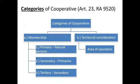Now, what are the categories of cooperative? We discussed types — categories are different. Cooperatives can be divided according to membership and territorial consideration. As to membership, a cooperative can be primary, secondary, or tertiary. In a primary cooperative, members are natural persons. In a secondary cooperative, members are primary cooperatives. In a tertiary cooperative, members are secondary cooperatives. As to territorial consideration, that refers to the area of operation.